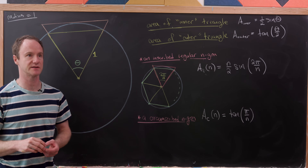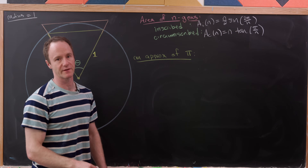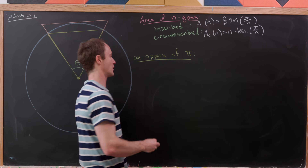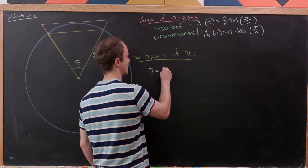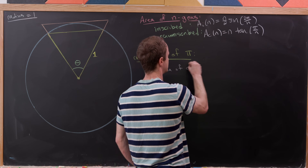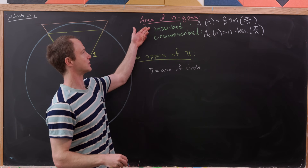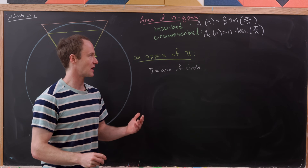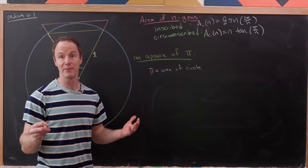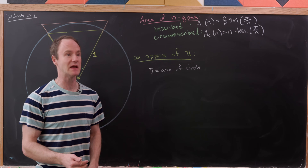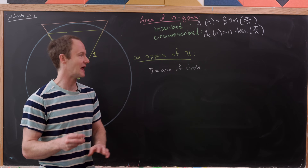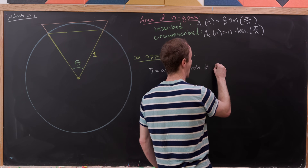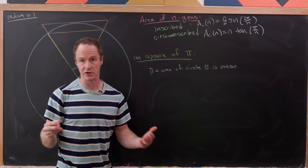Now let's put all this together to find approximations of pi. Since pi equals the area of the unit circle, it's approximately equal to the area of the inscribed and circumscribed polygons. The inscribed polygons are too small and the circumscribed polygons are too big, but we can remedy that by taking their mean — the arithmetic mean, the geometric mean, the harmonic mean, or any mean you like. We might approximate pi as a mean of Ac(m) and Ai(n), using different polygons for each.